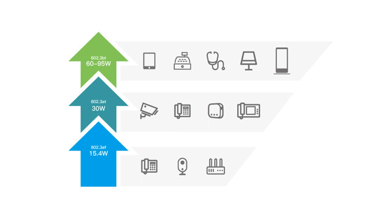The IEEE 802.3at standard, also known as the PoE Plus standard, can provide up to 30 watts of power, suitable for PTZ cameras or wireless access points. And the IEEE 802.3bt standard, also known as the PoE Plus Plus standard, can provide up to 60 watts of power to support high-power devices such as multi-sensor or advanced PTZ cameras.